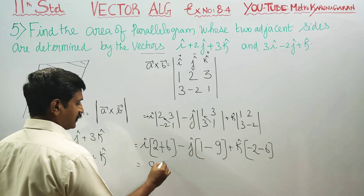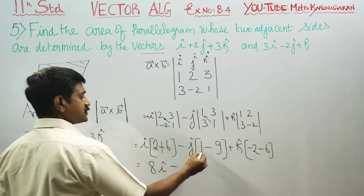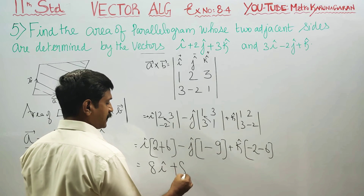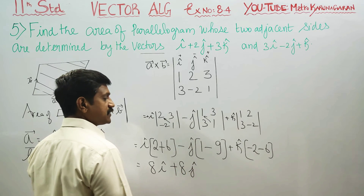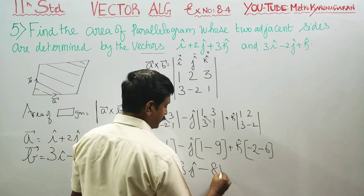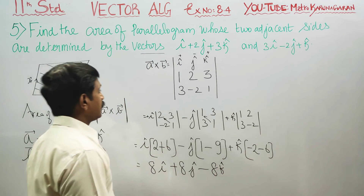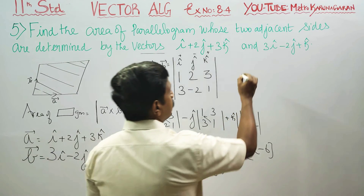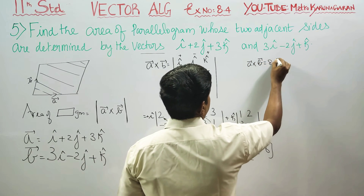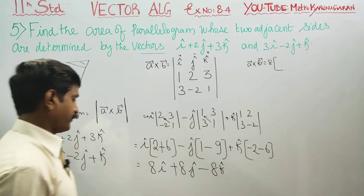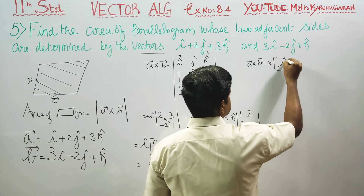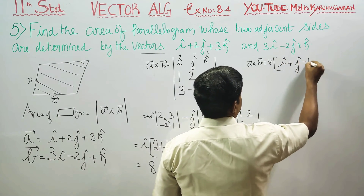Now we have 8i. This is 1 minus 9, which is minus 8. So this gives minus 8j. And 8k. Now you can find 8 common. A cross B is equal to 8 times the quantity i plus j minus k.